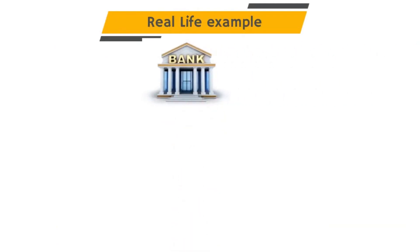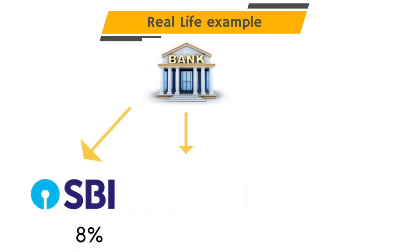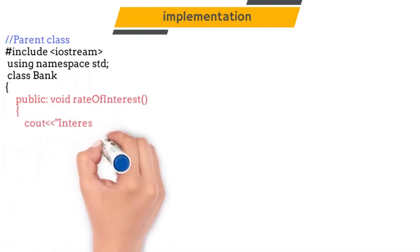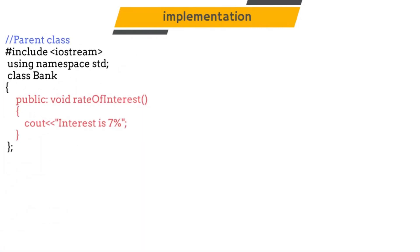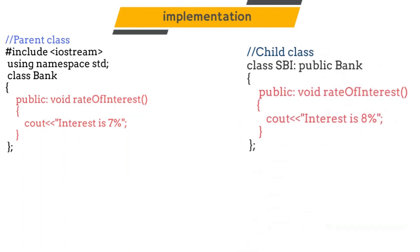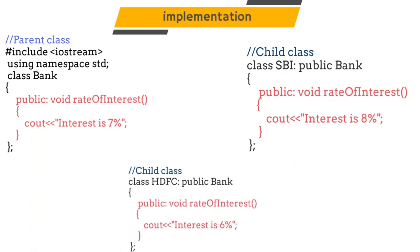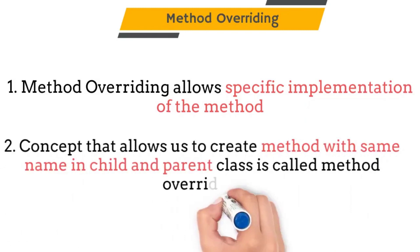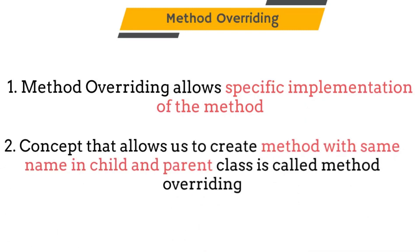Consider a real-life example of a bank. Each bank has a separate rate of interest: SBI has 8%, HDFC has 6%, and another bank has 7%. To implement this, we create a parent class Bank with a rate of interest method. We then inherit a child class SBI — the rate of interest method in this child class prints 8%. Similarly we create HDFC with 6%. We have provided specific implementations of the method in each child class. This concept is called method overriding.